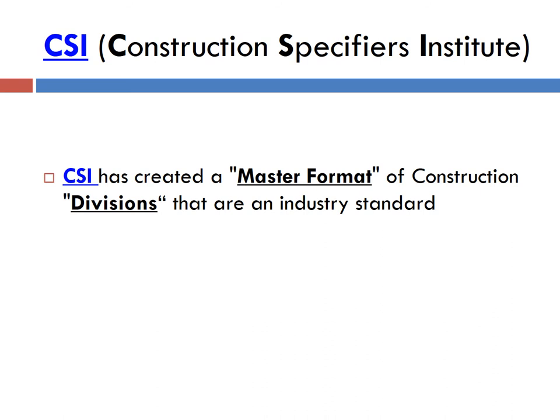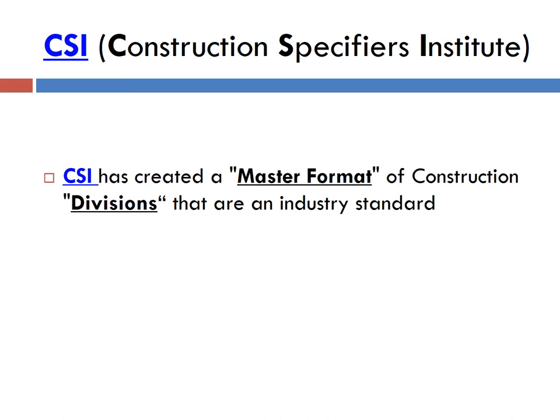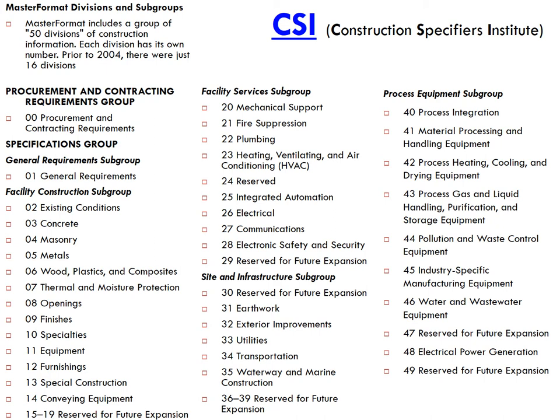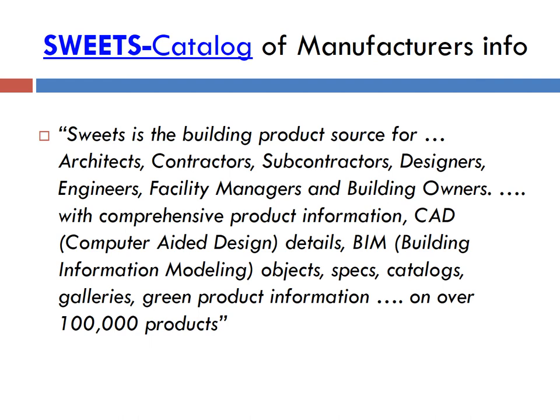CSI — the Construction Specifier Institute — sets the divisions that everybody adheres to, including AIA. It used to be about a third the size of what it is now; it gets very specific in the divisions and was reorganized a number of years ago. The Suites catalog is a very important collection of manufacturer's materials, now online and connecting to Revit. Revit is more than just for 3D drawings — it's also for information and specifications.